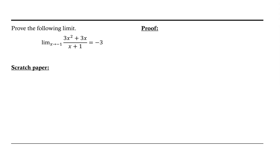Let's take a look at proving the following limit. We're interested in the limit as x approaches negative 1 of the quantity 3x squared plus 3x over x plus 1, and proving that that is equal to negative 3.